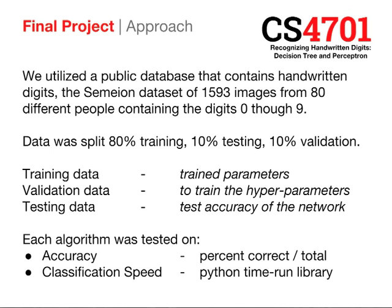We utilized a publicly available database donated to the Semien Center for Sciences of Communication for Machine Learning Research. The data set consisted of 1,593 images provided from 80 different people, each containing a digit zero through nine. The data was split 80% for training, 10% for testing, and 10% for validation.